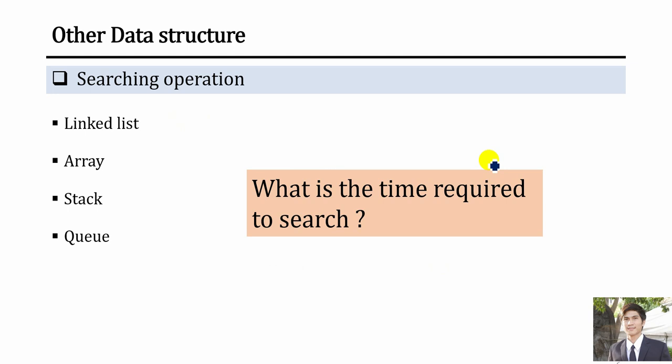When we want to search data inside a data structure, sometimes we need to loop — for example in an array you loop from the first to the last position. If the number we are searching for is in the middle, it takes an average-case amount of time. If it's at the first element, it's very fast — that's the best case. If it's at the last element, that is the worst case. For linked list and array, the time required to search is O(N) — we don't know exactly since it depends on where the number is stored. In the worst case, for 100 elements, you may need to loop 100 times to reach the target number.